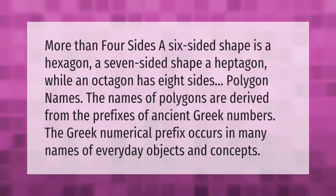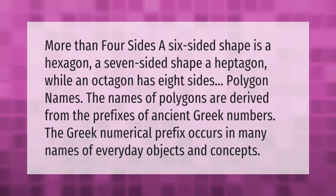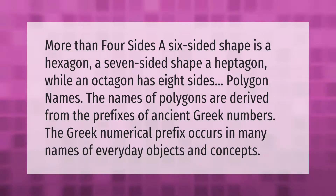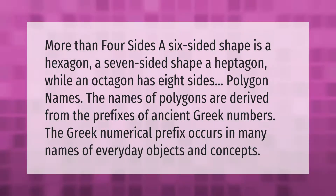More than four sides: a six-sided shape is a hexagon, a seven-sided shape a heptagon, while an octagon has eight sides. The names of polygons are derived from the prefixes of ancient Greek numbers, and the Greek numerical prefix occurs in many names of everyday objects and concepts.